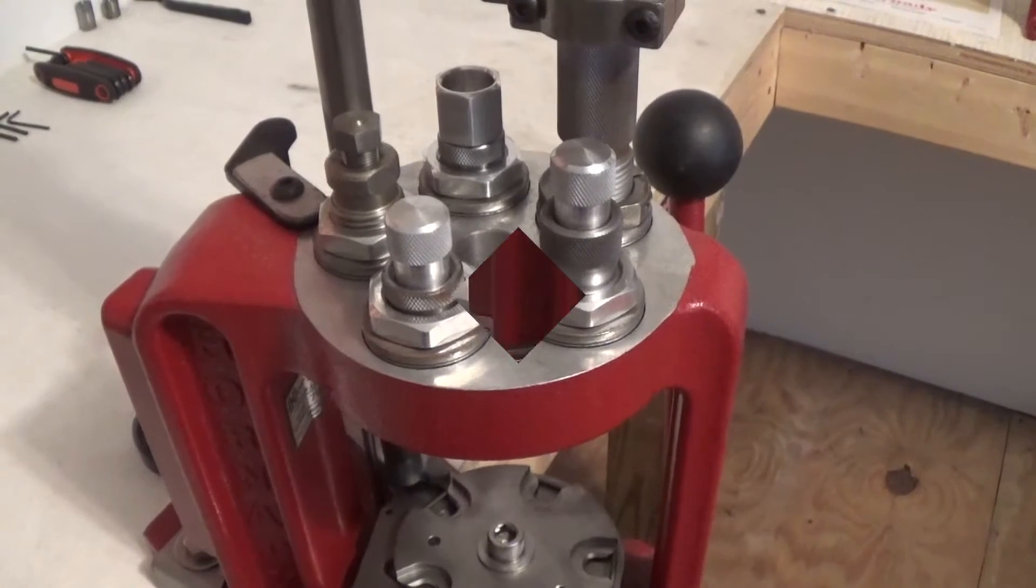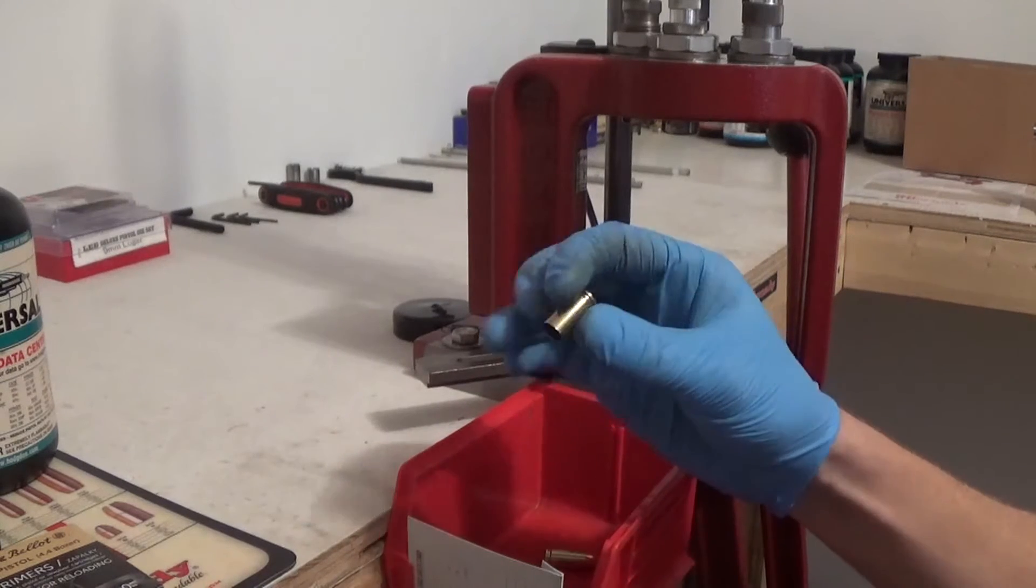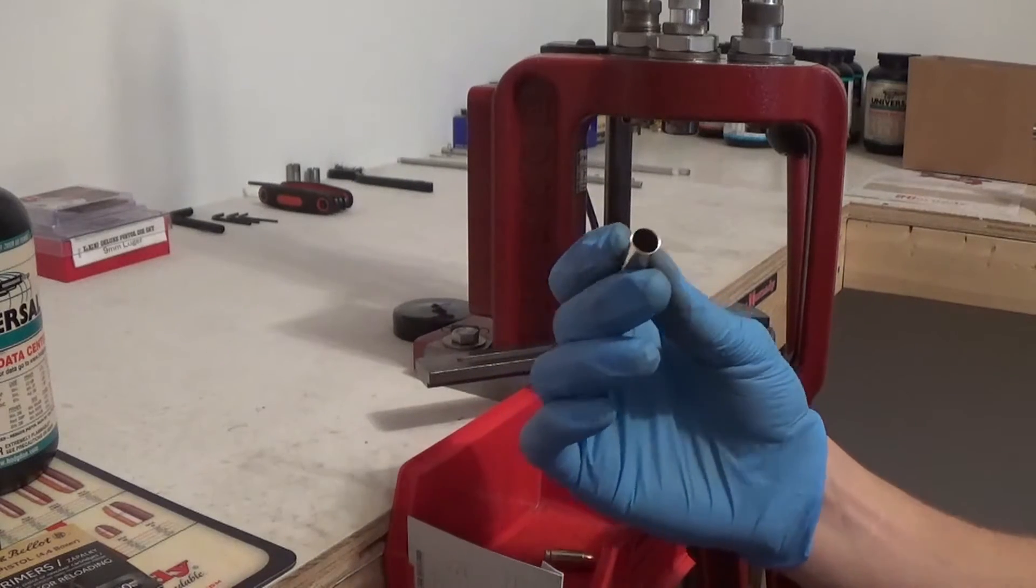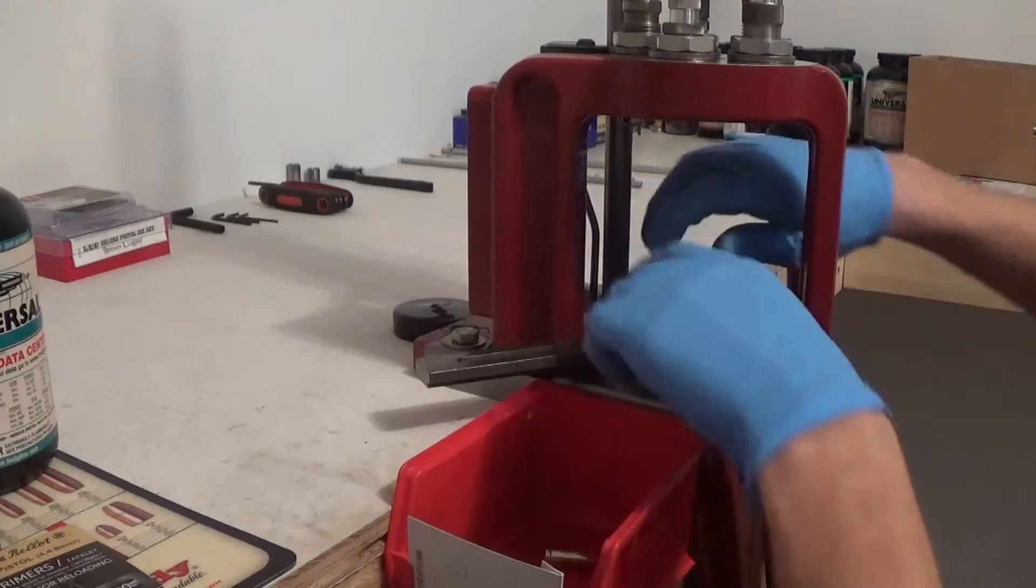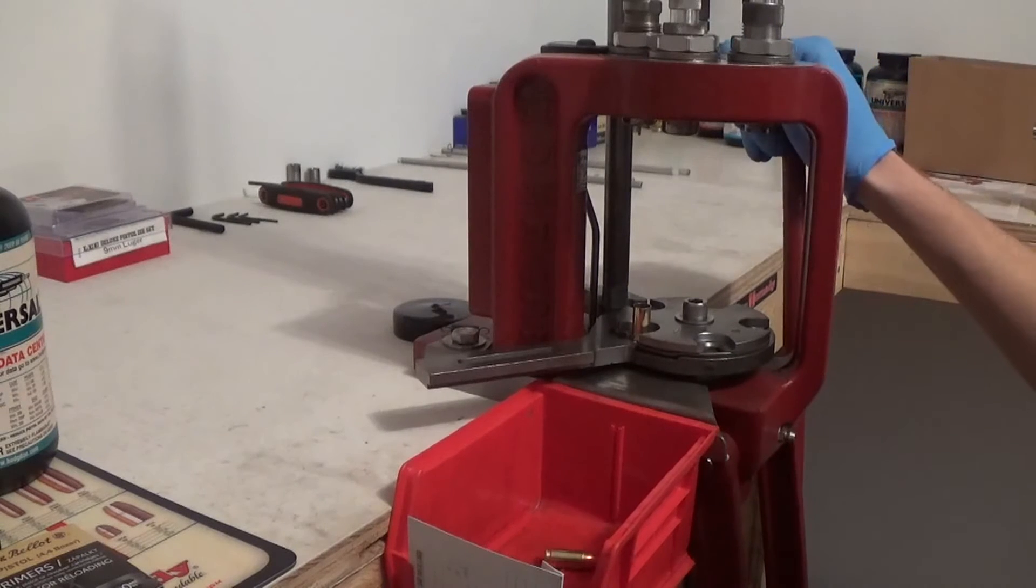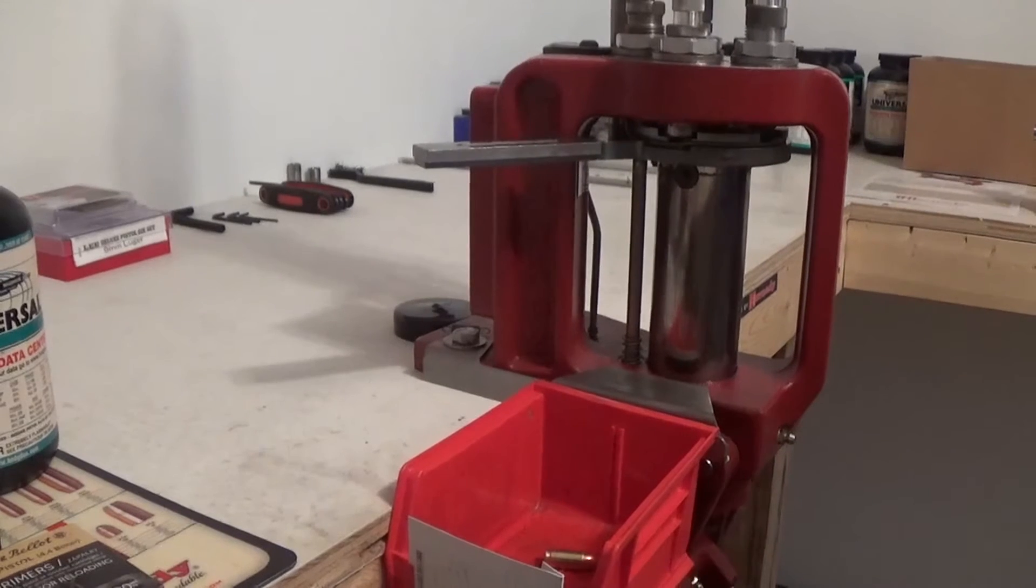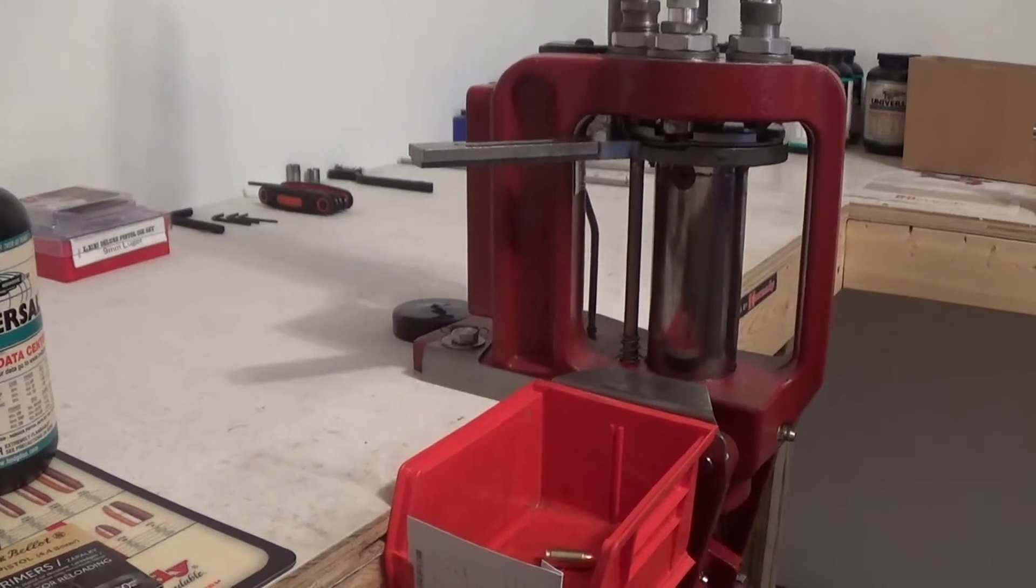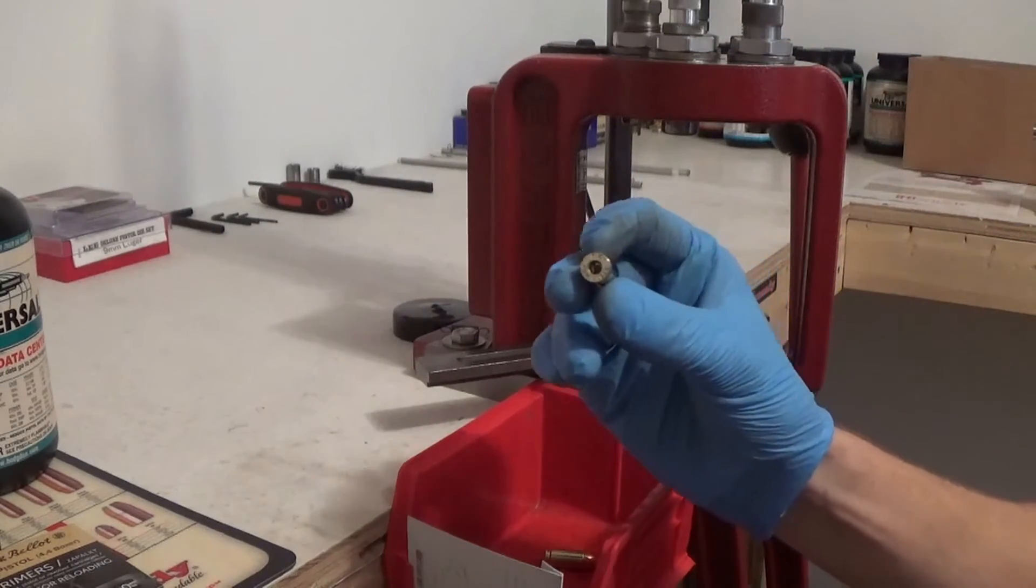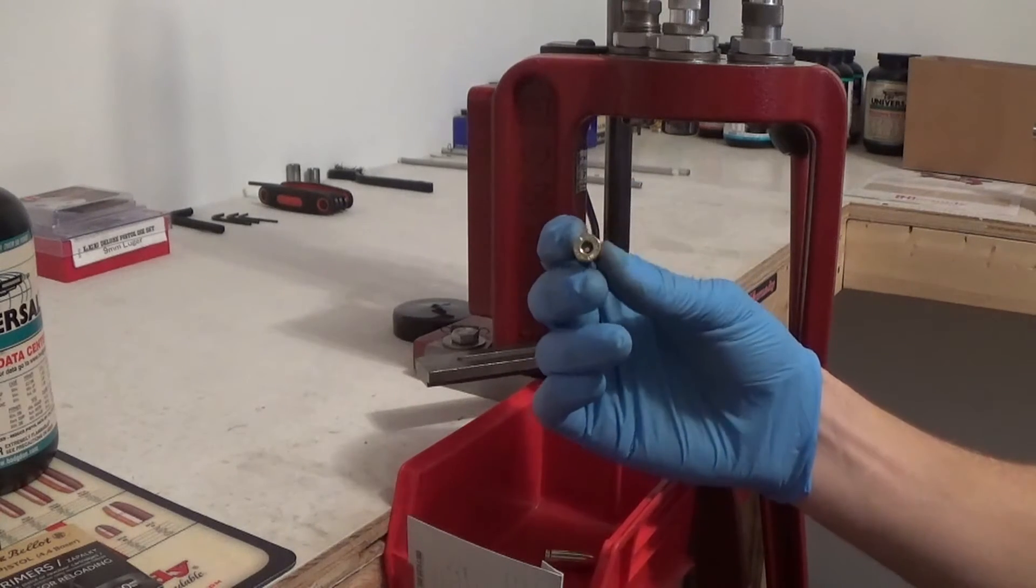Anytime you're reloading you start out with a spent piece of brass, a spent primer, no powder, no bullet, nothing. Drop that in your first stage. Now, like I said before, my first stage is resize and deprime. So at this point the primer is gone out of it. I knocked it out. The brass is now resized and it will fit in the chamber now. Now it has a new primer.